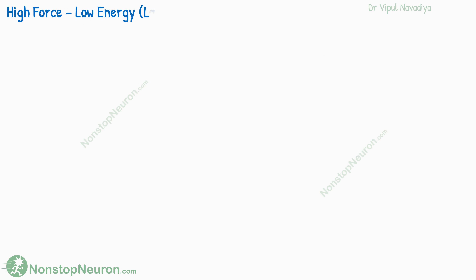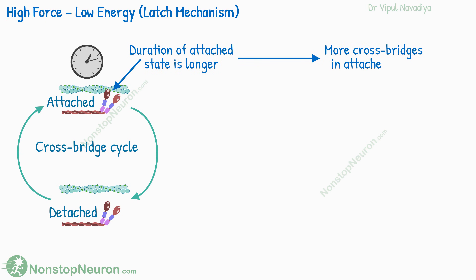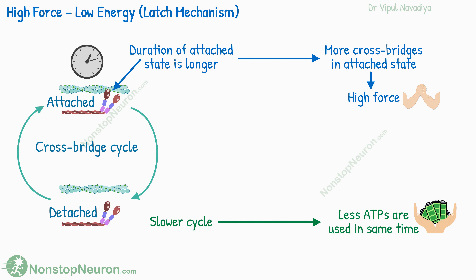Next, smooth muscles maintain high force at low energy consumption. In the crossbridge cycle, the duration of the attached state is mainly longer. Because of this, at any given time, more bridges are in an attached state. As force generation depends on the attached state, more attached crossbridges generate high force. At the same time, due to a slower cycle, fewer ATPs are consumed in the same duration, so energy consumption is also low.